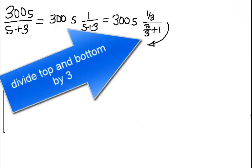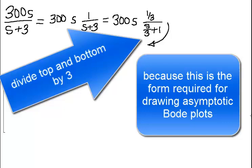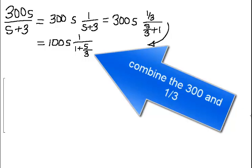Divide the top and bottom by 3, because this is the form required for drawing asymptotic Bode plots. Combine the 300 and the 1/3.